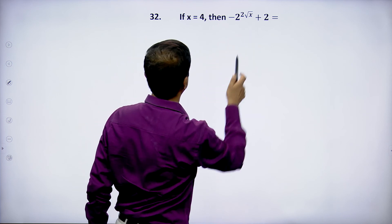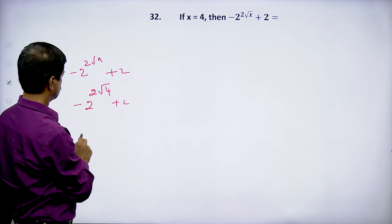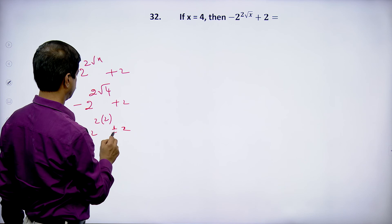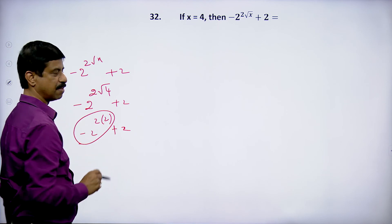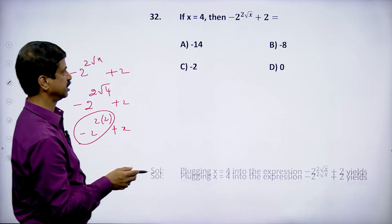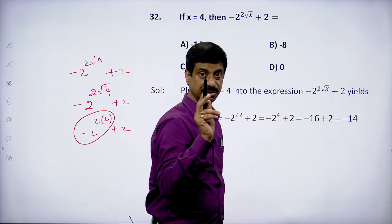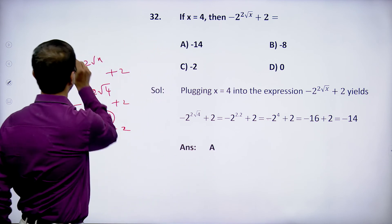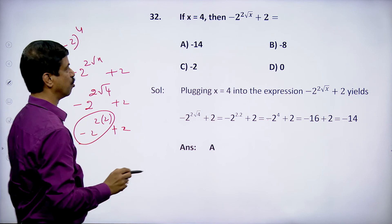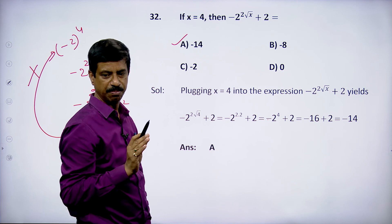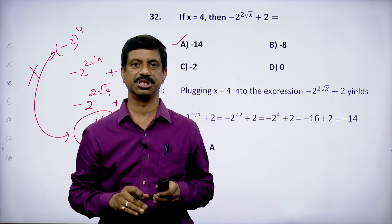x = 4. Find -2^(2√x + 2). √x = √4 = 2, so 2√x = 4, and 4 + 2 = 6. But wait — this is -2^(4+2) = -2^6... let me clarify: -2^4 + 2 = -16 + 2 = -14. Be careful: this is -(2^4) + 2, not (-2)^4. Option A satisfies. Students should not confuse the placement of the minus sign.